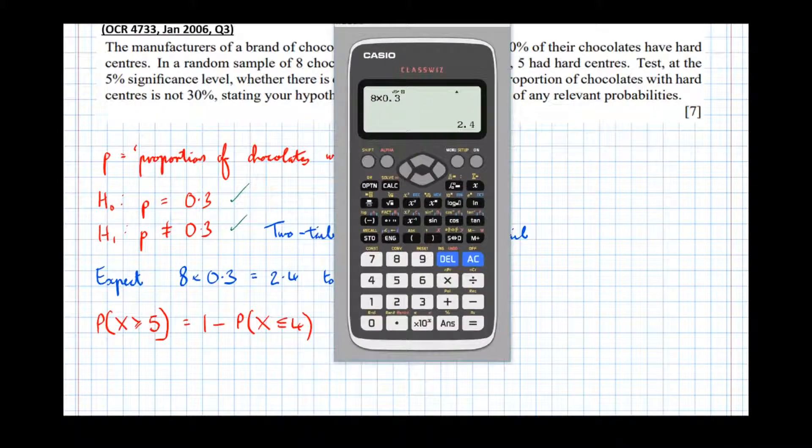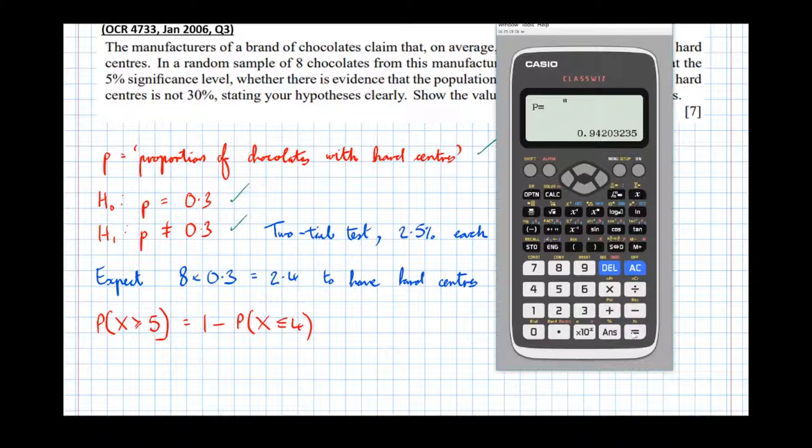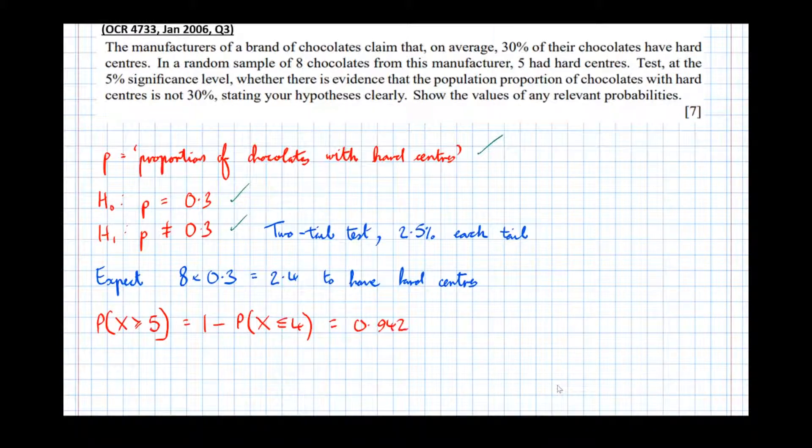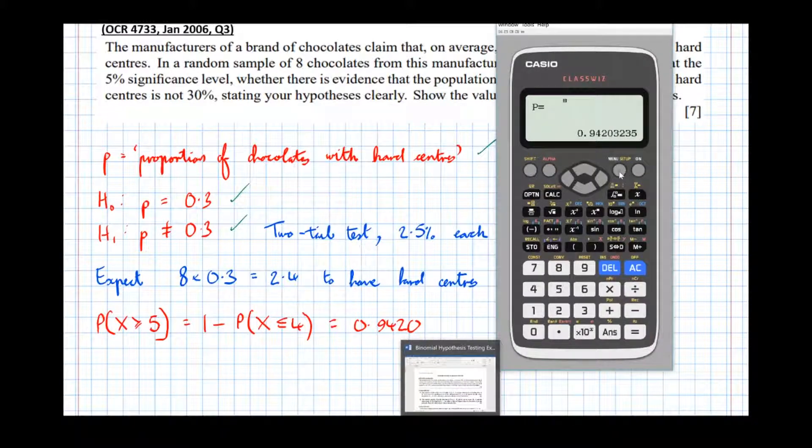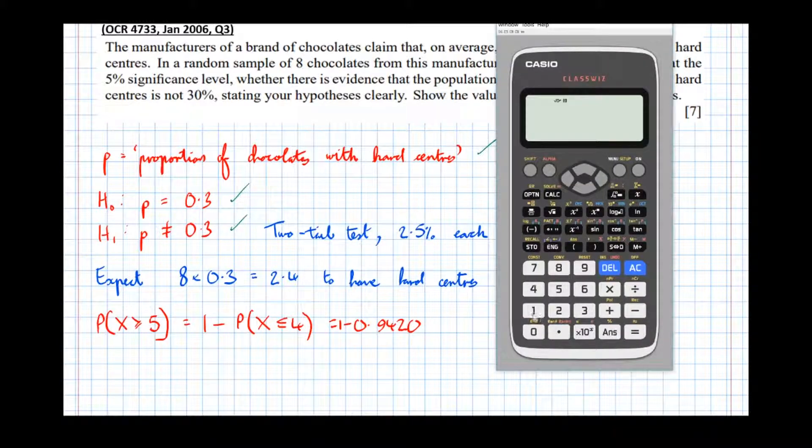Let's work that out in the calculator. So X is less than or equal to 4, binomial cumulative distribution. X is less than or equal to 4, number of trials was 8, and the probability of success was 0.3. So equals 0.9420, and 1 minus that: 1 minus answer is 0.0580.